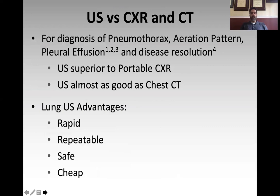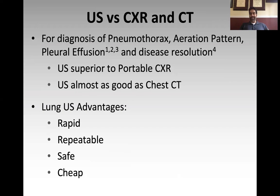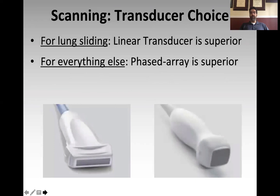These are the specific time-sensitive diagnoses we can include or exclude using ultrasonography very quickly and with a high degree of fidelity: pneumothorax, alveolar interstitial disease, atelectasis, consolidation, effusions, pleural disease, and diaphragmatic dysfunction. Studies have compared lung ultrasound in the ICU against portable chest x-ray and chest CT for identifying pneumothorax, aeration patterns, pleural effusions, and tracking disease progression — and ultrasound was better than portable chest x-ray and almost as good as CT, while being quick, repeatable, radiation-free, and cheap.